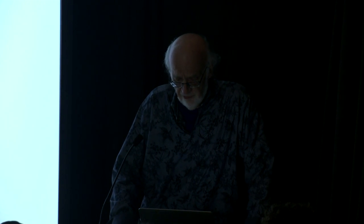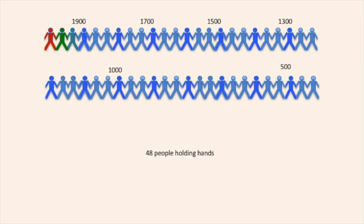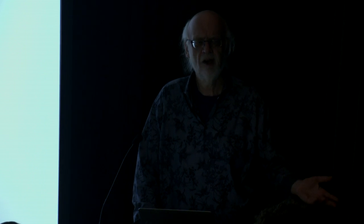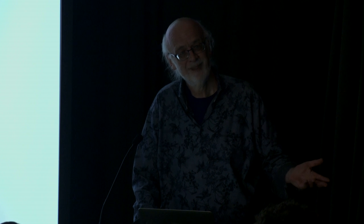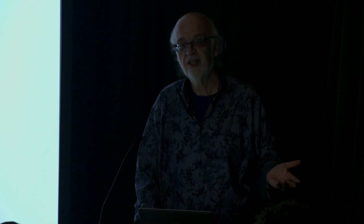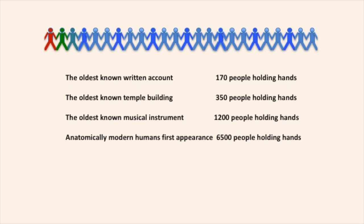Imagine 12 people standing here holding hands and playing Chinese Whisper — and it goes back to 1600. We can play this game further: 48 people holding hands goes back to 500 AD. 48 people is such a small number in our perception, but 500 AD is quite a while ago. The person 500 years ago is just whispering through 48 people to reach us — and it will obviously be a different message at the end. With 1,500 years, we say the message could have never reached us. So here are a few numbers in generations: the oldest known written account is 170 people holding hands. Before that, we have no written account.